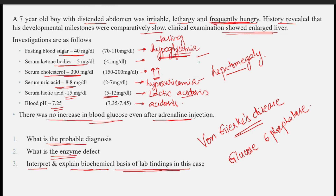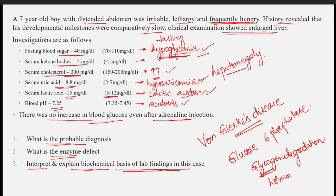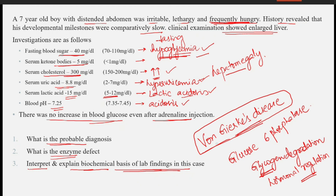In this question you will have to explain the biochemical basis of all the lab features — how this patient is getting hypoglycemia, why there is hypercholesterolemia, why there is hyperuricemia, and lactic acidosis. The question may also ask you to write in detail about glycogen metabolism, including glycogen degradation and synthesis, along with hormonal regulation of glycogen. So entire glycogen metabolism can be asked when a clinical question on Von Gierke's disease is asked.